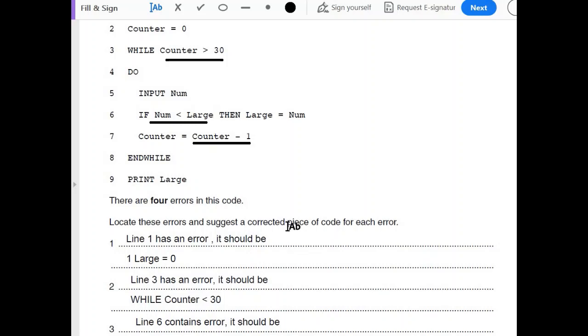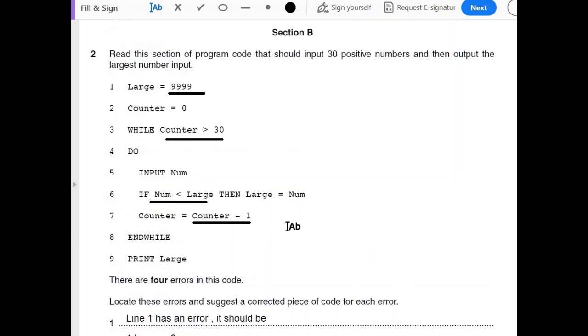There are many questions of finding errors in algorithms in the past papers. They do not come every year or in every variant, but they occur quite often. So do a lot of practice and you'll soon be an expert in finding errors. And this type of question is most likely to come in your paper for about four to five marks.